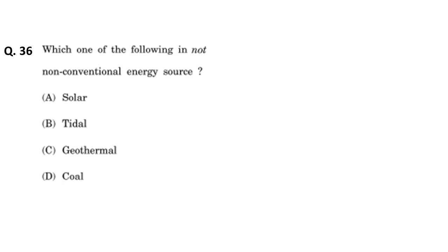The thirty-sixth question: which of the following is not a non-conventional energy source? Options are A) solar, B) tidal, C) geothermal, D) coal. Non-conventional energy sources include solar, wind, tidal, and geothermal. Conventional energy sources include coal and petroleum. So the correct answer is D — coal is not a non-conventional energy source.